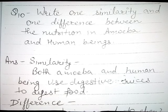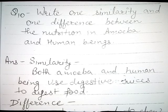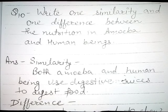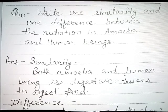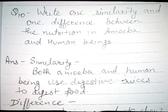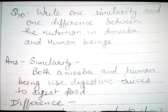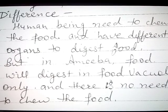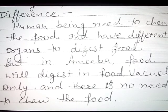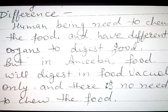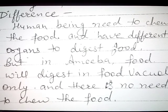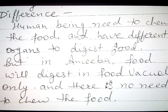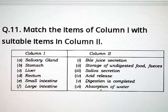Question number 10: write one similarity and one difference between nutrition in amoeba and human beings. Similarity: both amoeba and human beings use digestive juices to digest food. Difference: human beings need to chew food and have different organs to digest food, but in amoeba, food is digested in the food vacuole only and there is no need to chew the food.